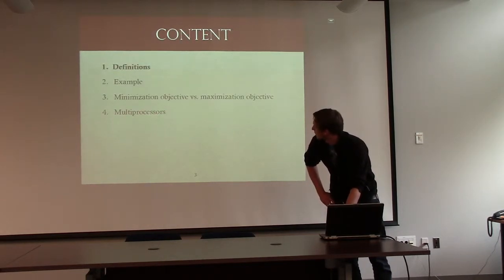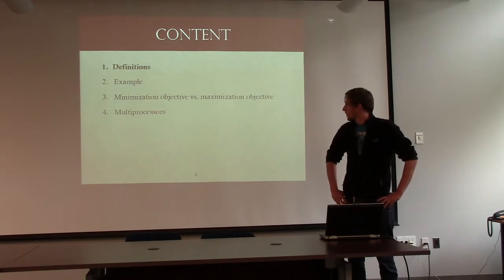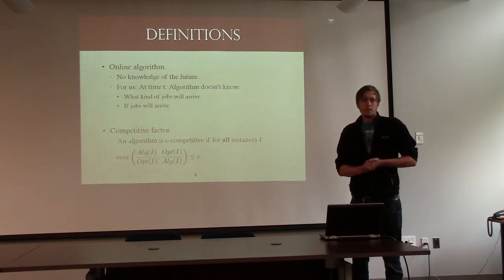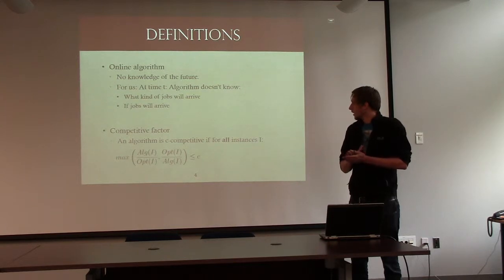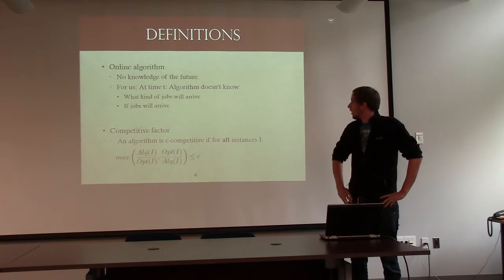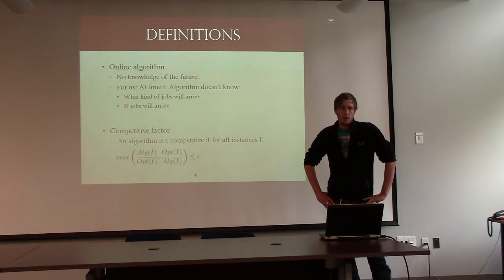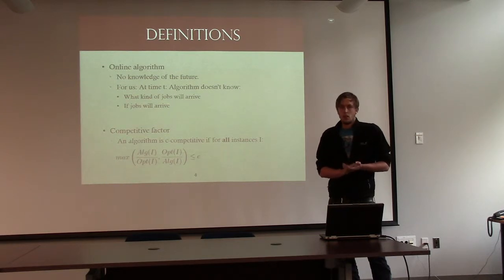Okay, I'll start with definitions, give an example, and then I'd like to talk about two different objectives you might have in this context, and if time permits it, we will extend it to multi-core processors. Okay, so in our setting, we are looking at an online algorithm. That makes sense, because if you're in a data center, you don't know when your jobs are going to arrive, and you even don't know if jobs at all are going to arrive. So we don't have any knowledge about the future.